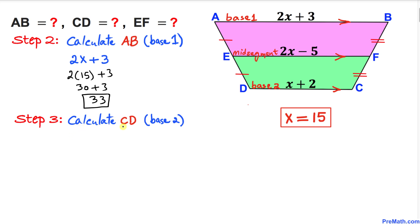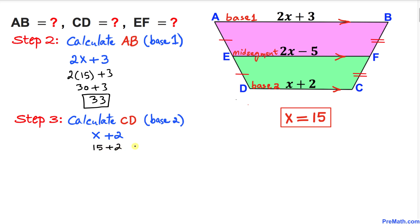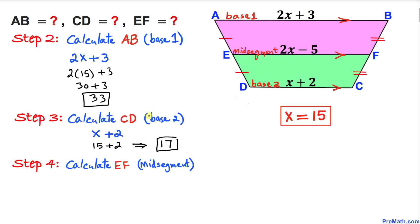Now let's calculate CD, which is Base 2. Substituting x = 15 into x + 2: 15 + 2 = 17. So CD = 17.